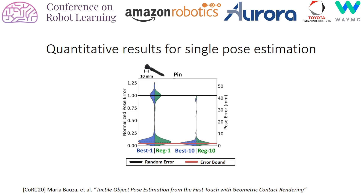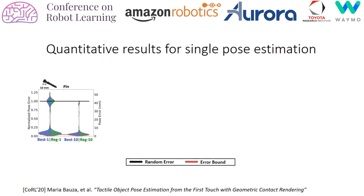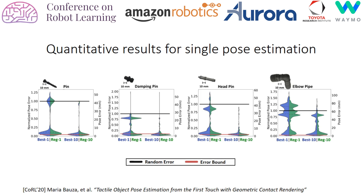The clear improvement comes when you look at the distributions and select the best out of ten. The multi-modality is gone, because when you consider multiple poses, it is likely that the contact shapes from several poses have all been included in the candidate set. We compute these results for four different objects, and again you can see how multi-modality occurs often, due to the non-uniqueness where different poses can result in very similar or even the same contact shapes.